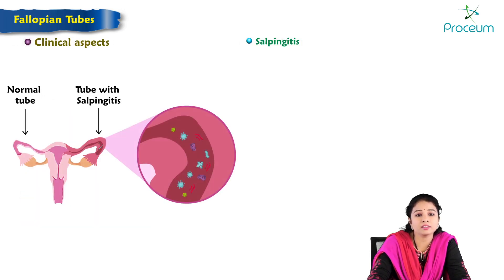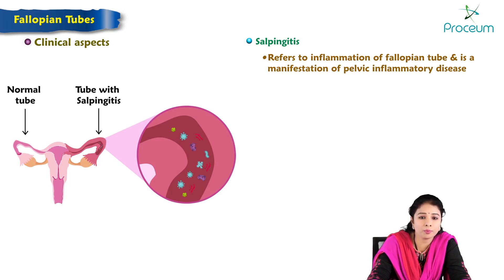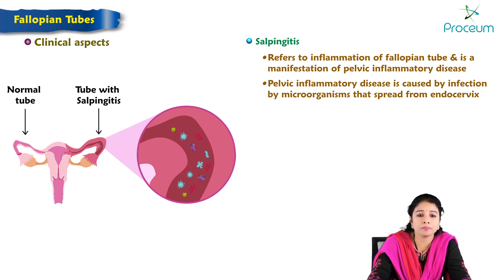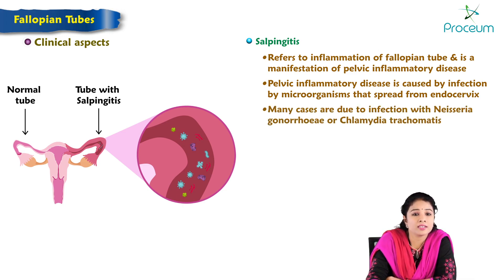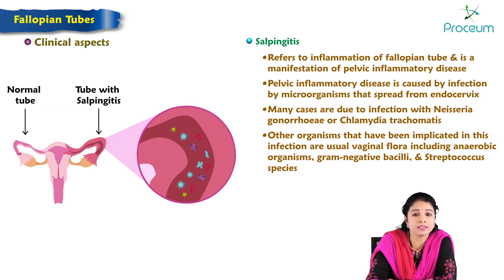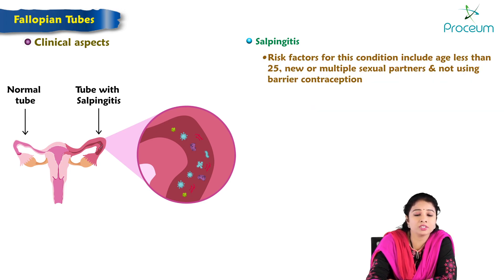Salpingitis refers to inflammation of the fallopian tubes and is a manifestation of pelvic inflammatory disease. Pelvic inflammatory disease is caused by infection by microorganisms that spread from the endocervix. Many cases are due to infection with Neisseria gonorrhoeae or Chlamydia trachomatis. Other implicated organisms include usual vaginal flora including anaerobic organisms, gram-negative bacilli, and Streptococcus species. Risk factors include age less than 25, new or multiple sexual partners, and not using barrier contraception.